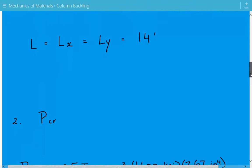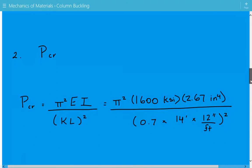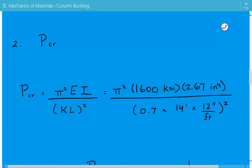Now we can calculate the critical buckling load. It's equal to pi squared times the modulus of elasticity times the moment of inertia divided by the effective length squared. Plug in the numbers: pi squared times 1600 KSI.